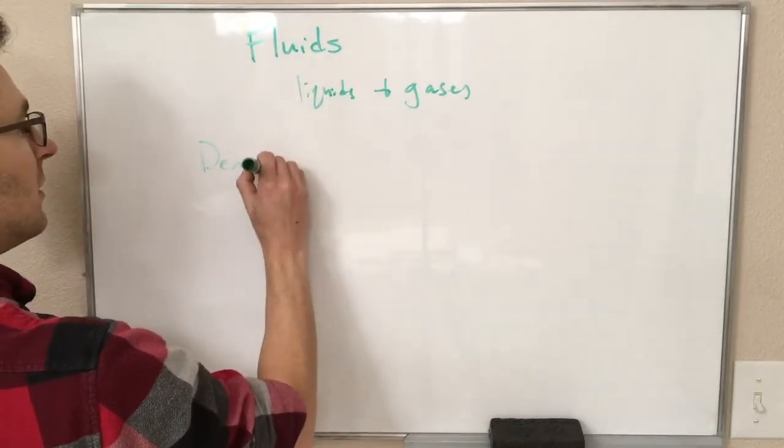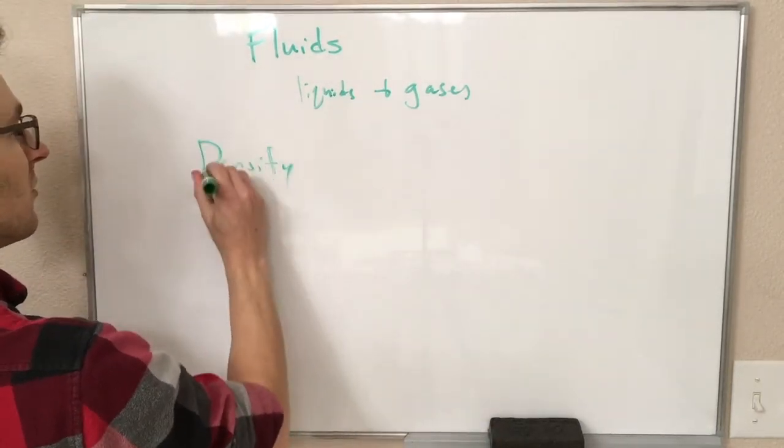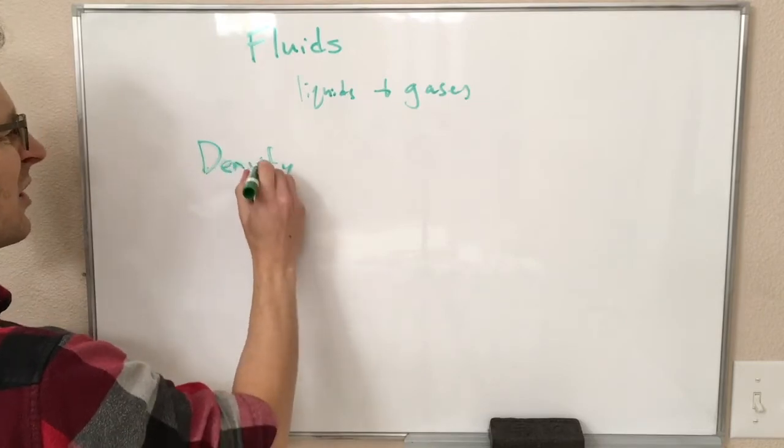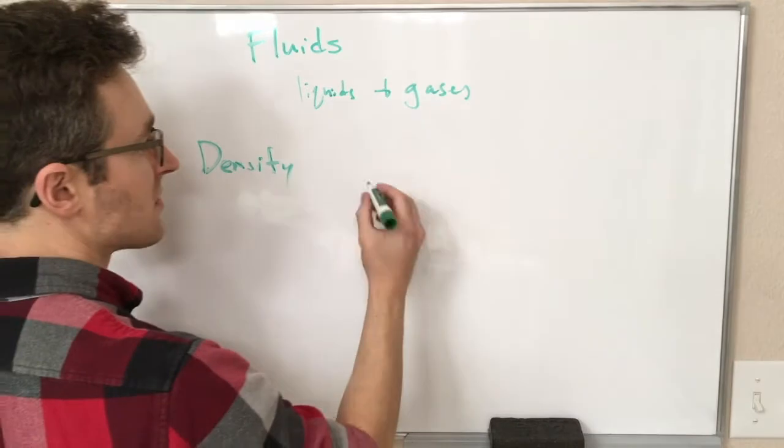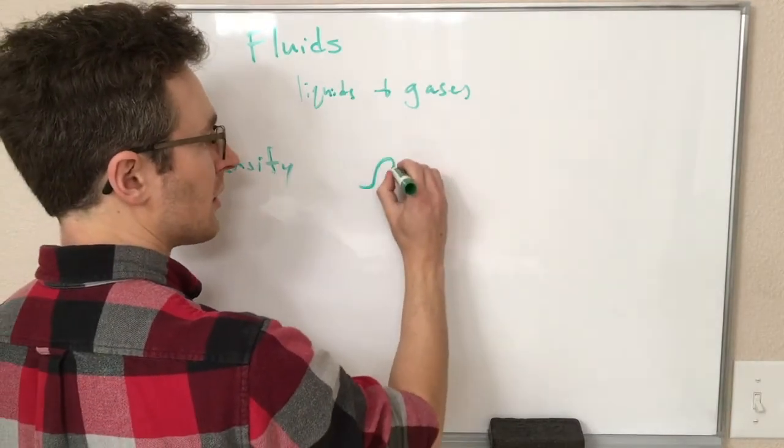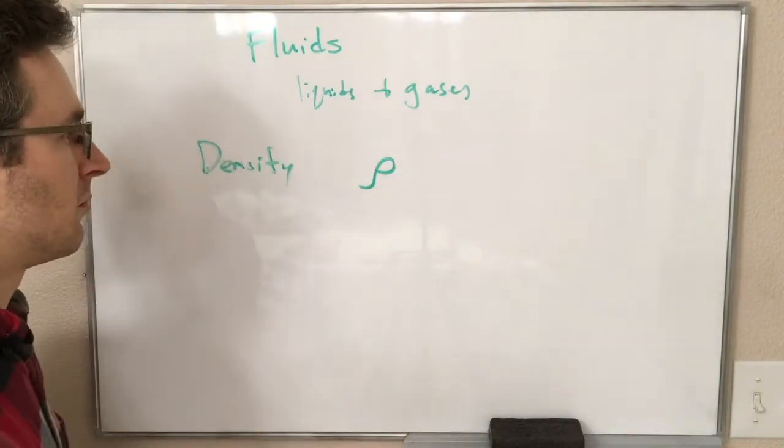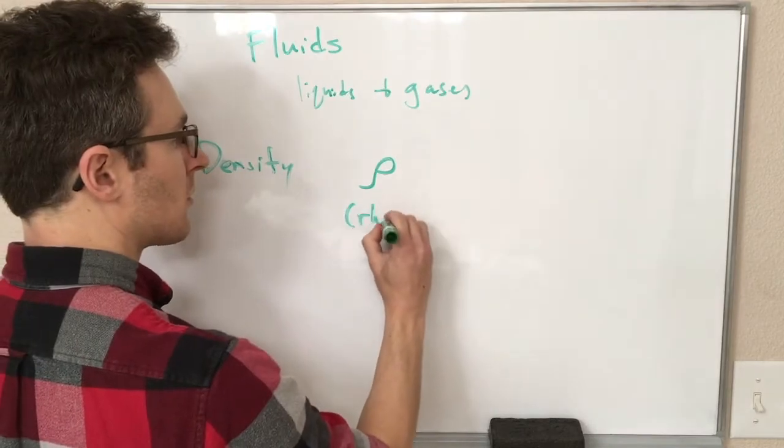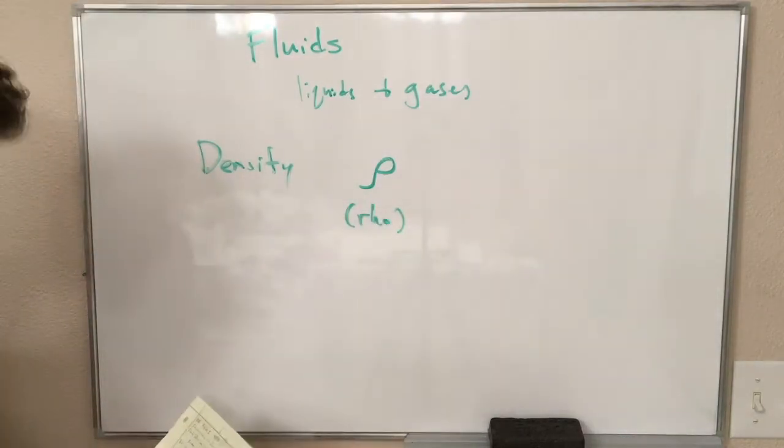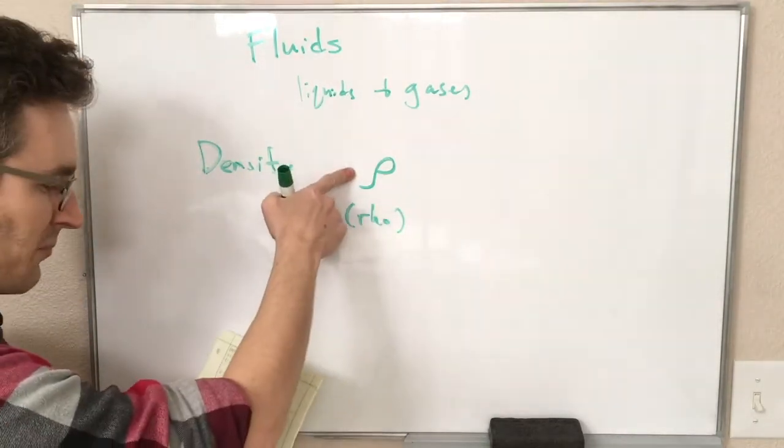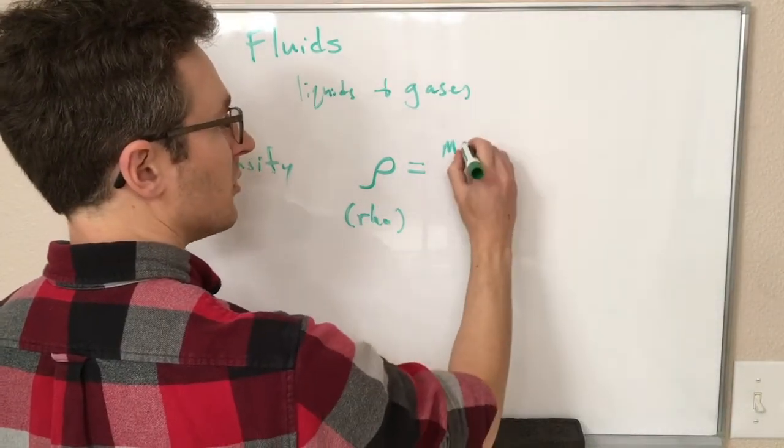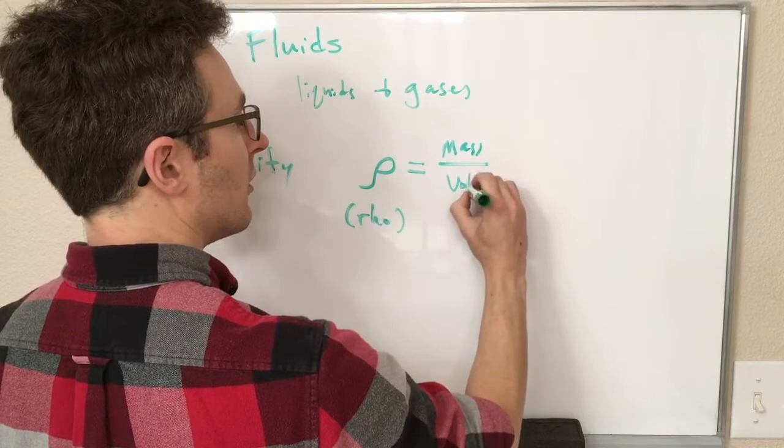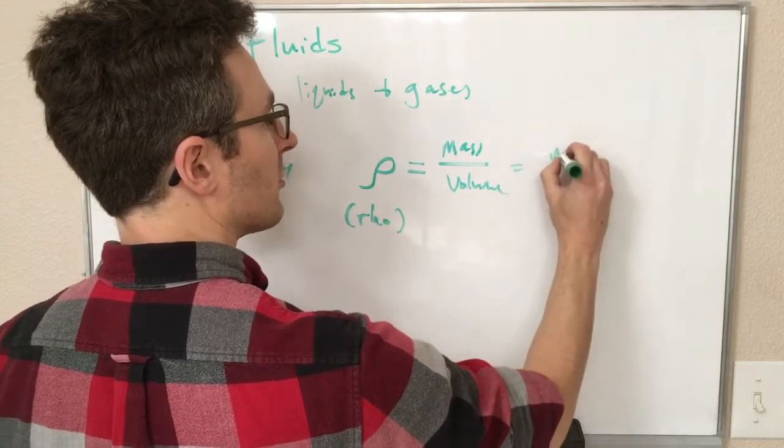We represent the mass per unit volume of the fluid. That is, of course, the density which we have encountered elsewhere in other physical science classes. The variable for density that we use in this class is rho, a Greek letter rho that looks kind of like a P. Our density is just the mass of our fluid over the volume of our fluid.